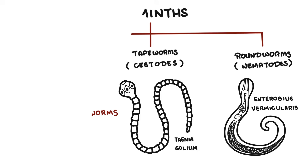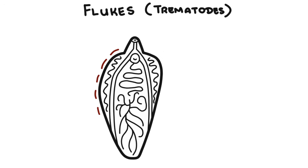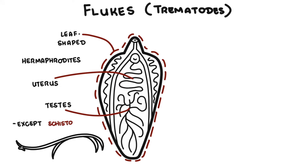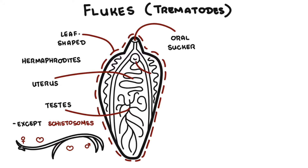Let's talk about each of these three types of helminths in more detail, beginning with flukes. Flukes, also known as trematodes, are leaf-shaped flatworms. The majority are hermaphrodites, meaning they have both male (testes) and female (uterus) reproductive organs in the same individual. The schistosomes are the only trematodes which have separate sexes. Trematodes have two suckers — one oral and one ventral — which help them to move and anchor to host tissue.